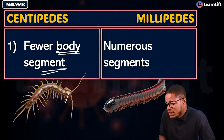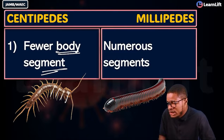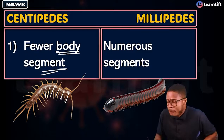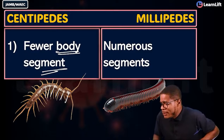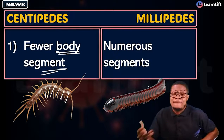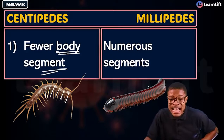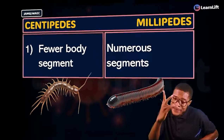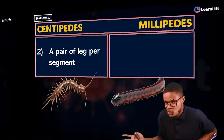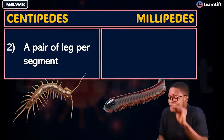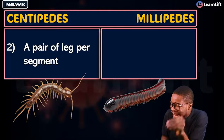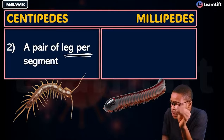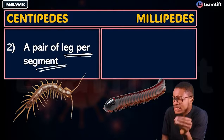You can easily count the body segments of a centipede — one, two, three, four — whereas with millipedes, there are far more segments. That's the first key difference: centipedes have fewer, millipedes have numerous body segments.